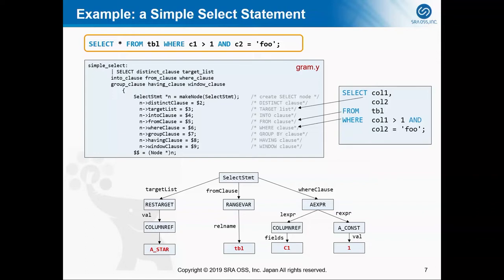As you can see in this parse tree, at the top is the root node, which is the SELECT statement. Under this root node there are some child nodes, like target list, FROM clause, and WHERE clause. For debugging or other specific purposes, you may want to output such a parse tree to your log file. By turning on some config parameters we can output a query tree or plan tree to the log file, but we cannot output the raw parse tree to the log file.